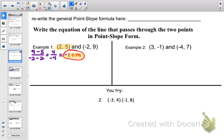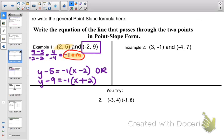And here's where you have the choice. You can pick the first or the second point to use. For this example, I'm going to choose the first point. Plug them in. y minus 5 equals negative 1 times x minus 2. We could have chosen to use the other point so that we have two solutions. So if I use (-2, 9), I get y minus 9 equals negative 1 times x minus negative 2, which changes to x plus 2. Let's look at that second example.